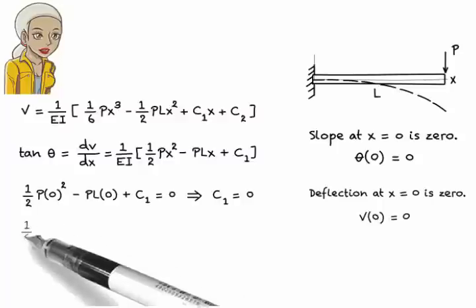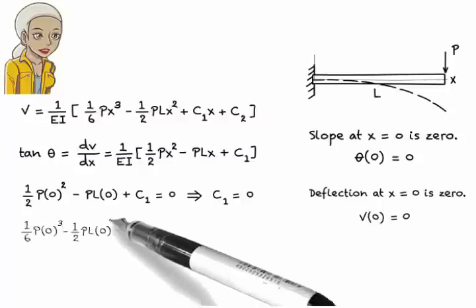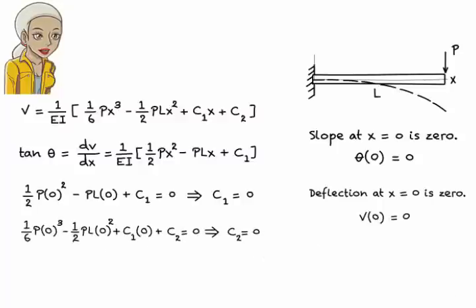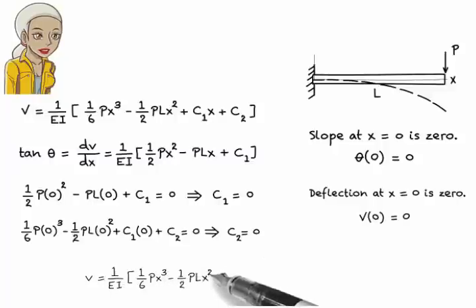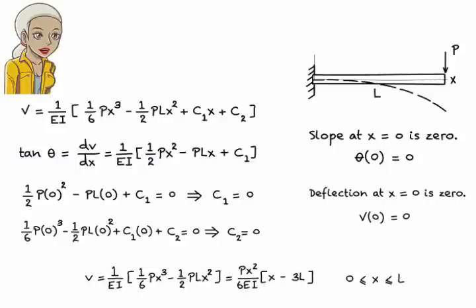Also, at x equals 0, deflection is 0. Therefore, c2 must be 0. Finally, the simplified deflection equation is, v equals px squared over 6 ei times x minus 3l.